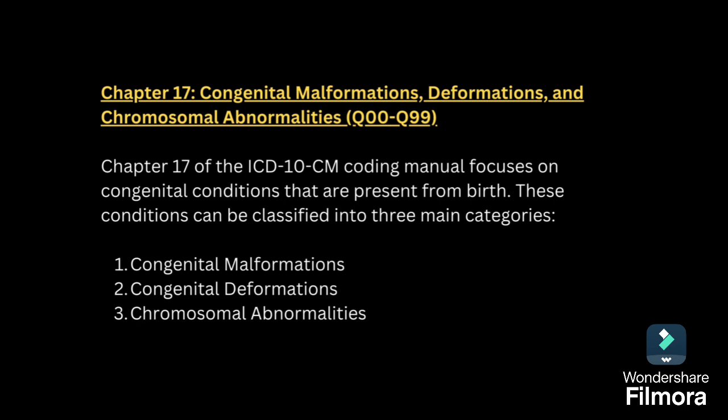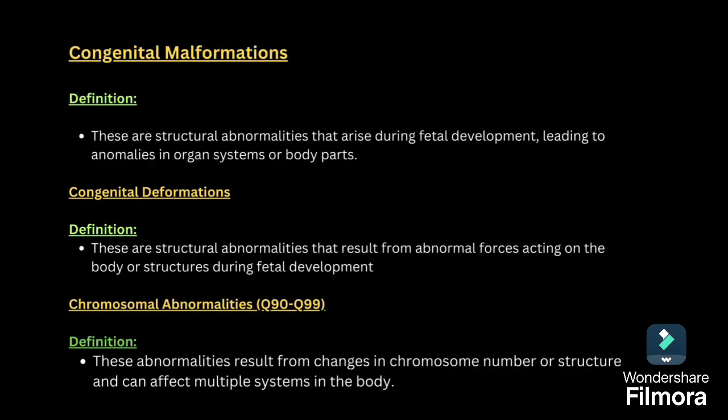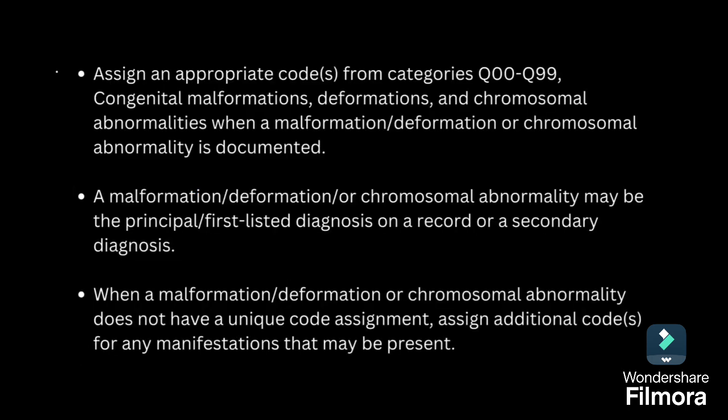So we will see the definition for each. Congenital malformations are structural abnormalities that arise during fetal development, leading to anomalies in organ systems or body parts. Congenital deformation means deformity in the structure. Chromosomal abnormalities are changes in chromosome number or structure and can affect multiple systems in the body.